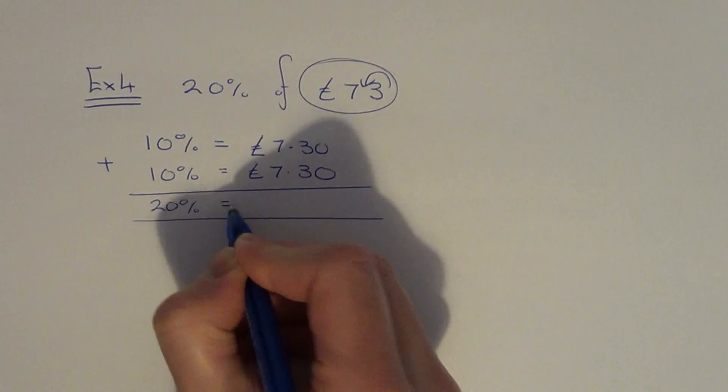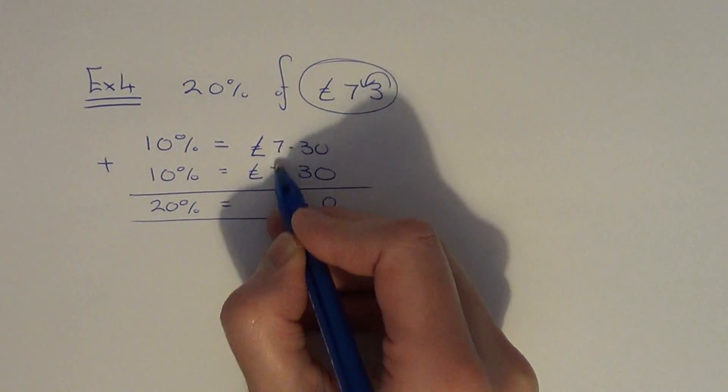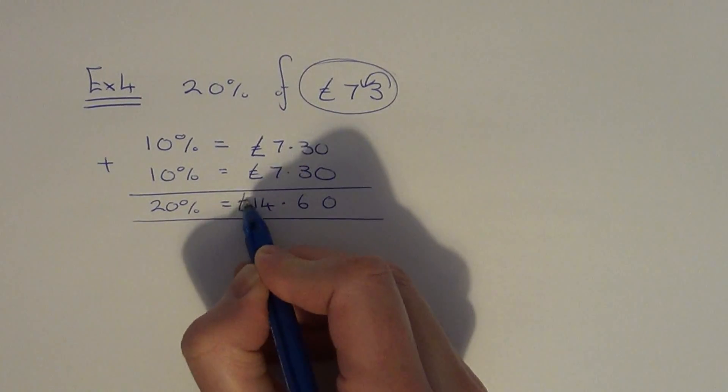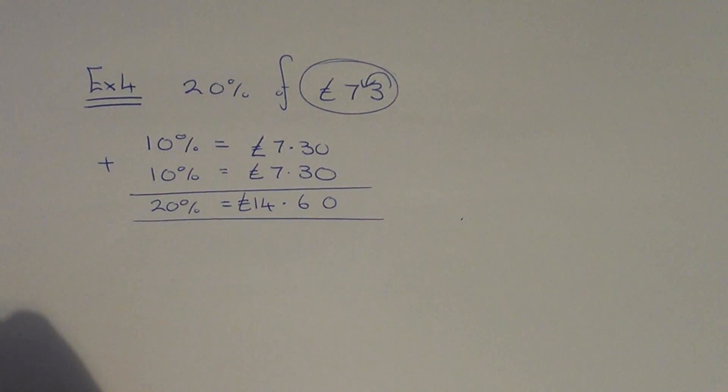So we want 20% this time so we need two of these 10%. So if we add these up this will give us 20%. 0 and 0 is 0, 3 and 3 is 6, 7 and 7 is 14. So our final answer is £14.60.